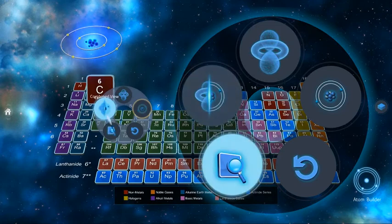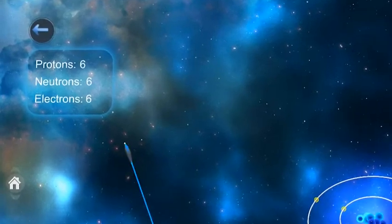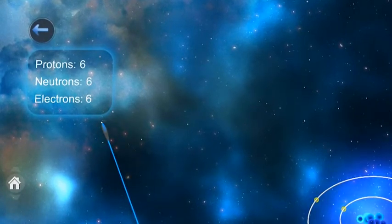If we select the detailed view, we can read about this element and learn about its structure. Here we can see how many protons, neutrons, and electrons are in this element.